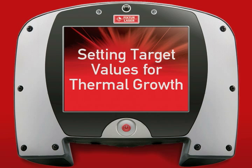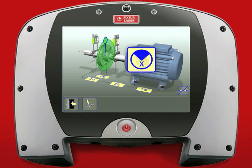Setting Target Values for Thermal Growth. The XA can automatically adjust the alignment results to account for dynamic growth, also known as thermal growth. The user simply enters target values which specify where the machine should be positioned when cold to get a correct alignment when the machine is running in a hot condition.